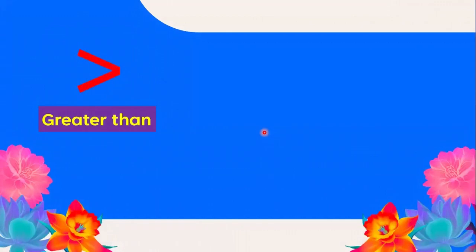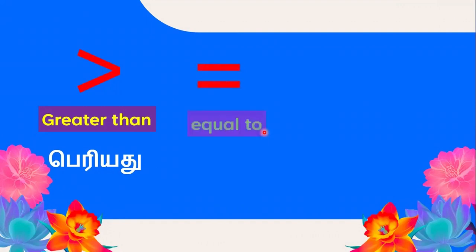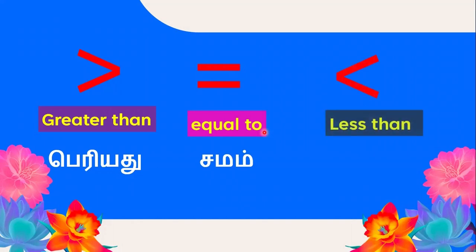Next is greater than, less than, and equal to. If we know the different numbers, we can identify which is the small number and which is the big number. The same number is equal to equal to. If the numbers are the same, then the number is less than or equal.